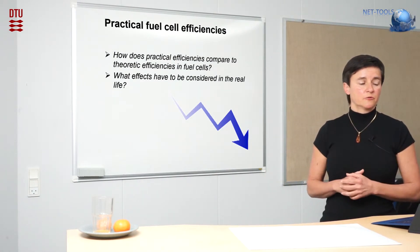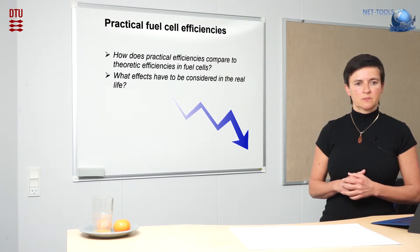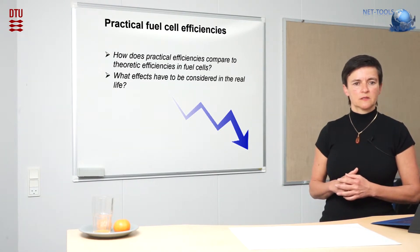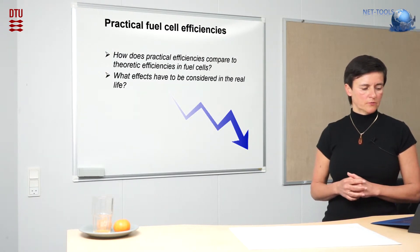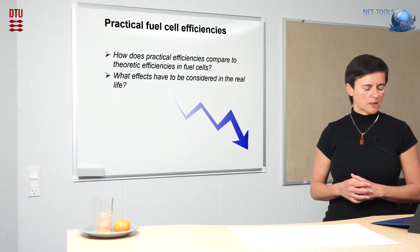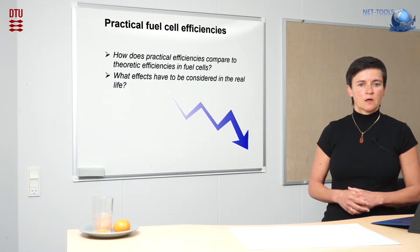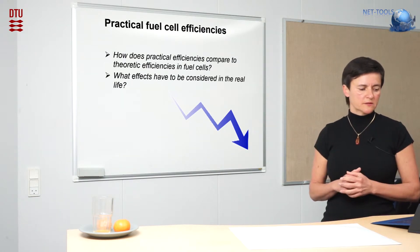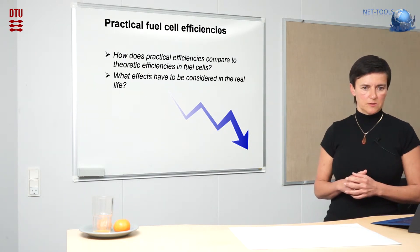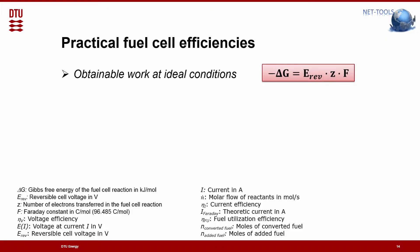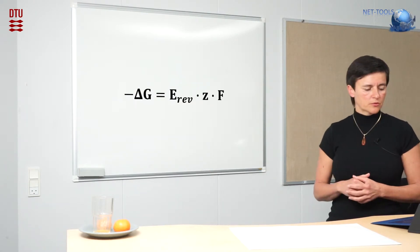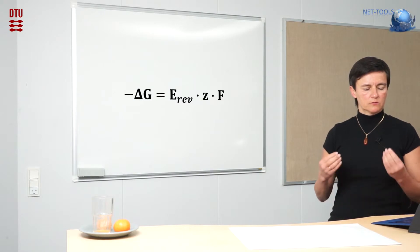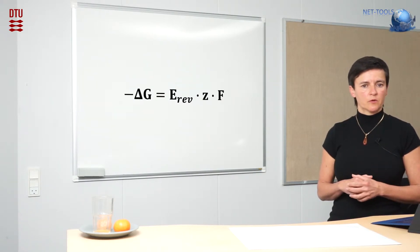From the theoretic efficiency, there are always some obstacles. In a practical case, you will often obtain lower fuel cell efficiencies. Here we go through the topics: how does this relate to the theoretic efficiency and what processes have to be considered. First, we talked about the obtainable work, the Gibbs free energy. And this is shown here - how it relates to the cell voltage or the reversible voltage from the fuel cell. This is a theoretical value.